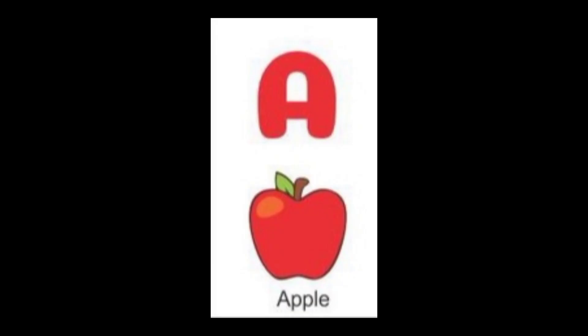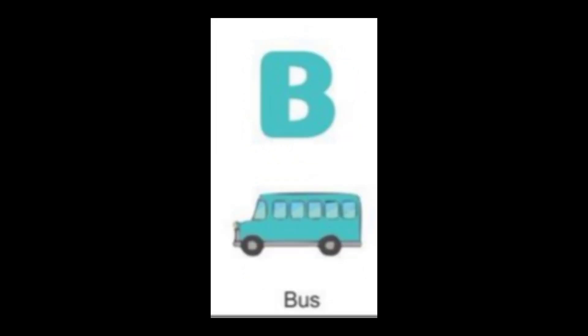The first letter is A. A for apple. The color of apple is red. The next letter is B. B for bus. The color of the bus is blue.